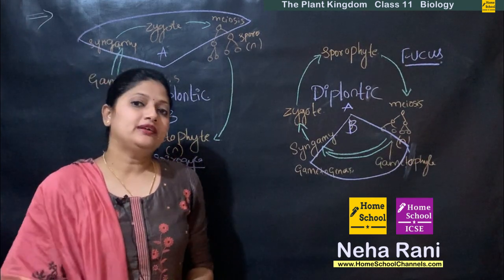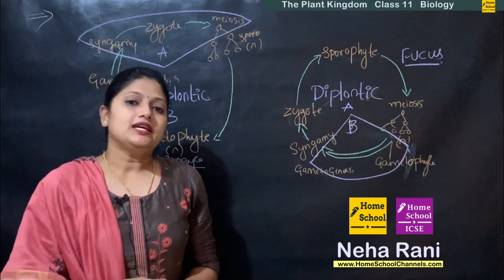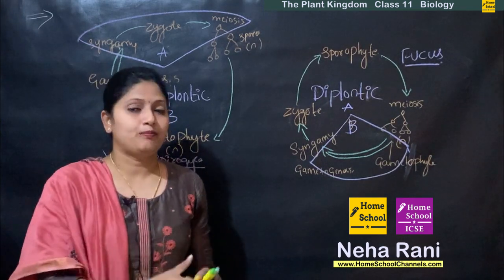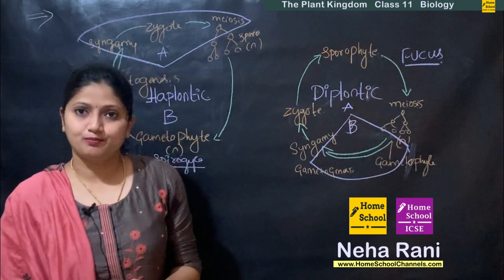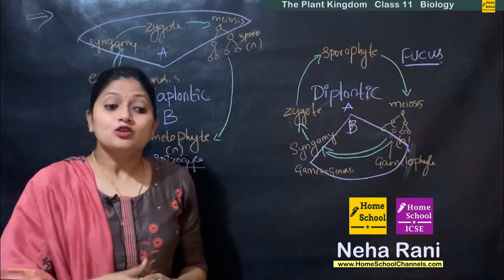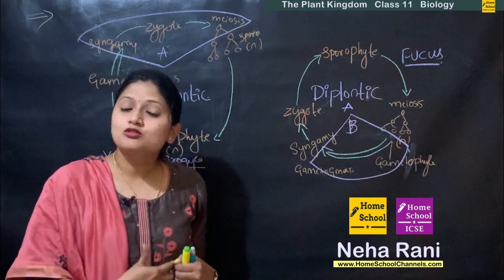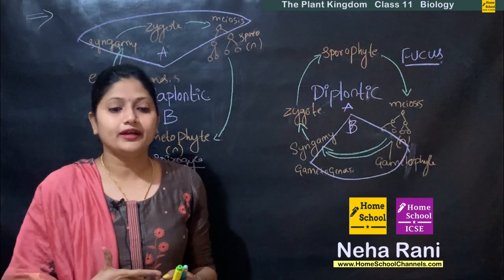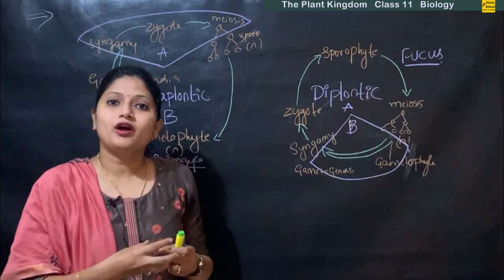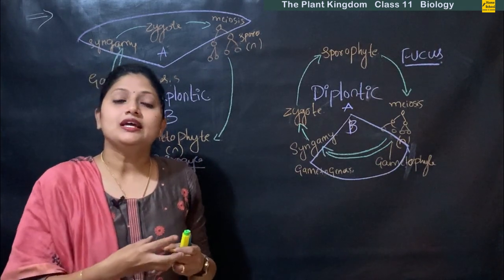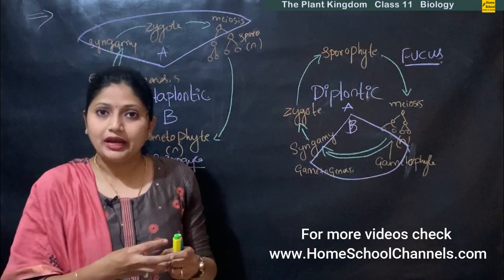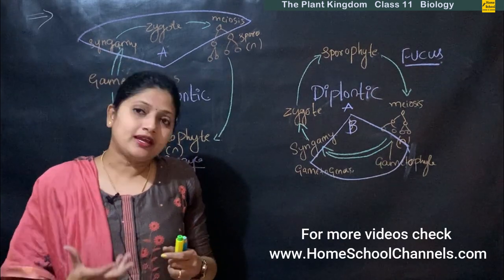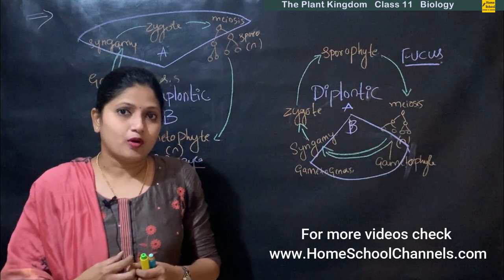So what do you mean by alternation of generation? In the plant body we get to see both haploid cells as well as diploid cells. Both haploid cells can divide and diploid cells can also divide. When haploid cells divide they can give rise to a haploid plant body, and when diploid cells divide they can give rise to a diploid plant body.